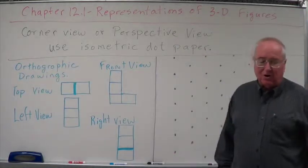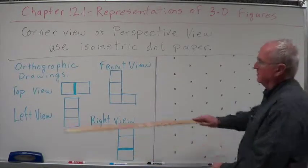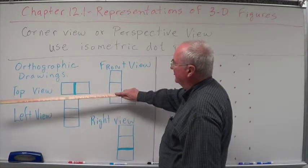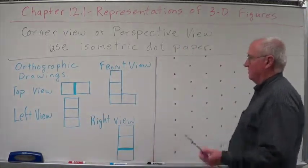Of what we call orthographic drawings. Now, orthographic drawings will show in two dimensions only. A top view, right here, this is a top view, a left view, a front view, and a right view.